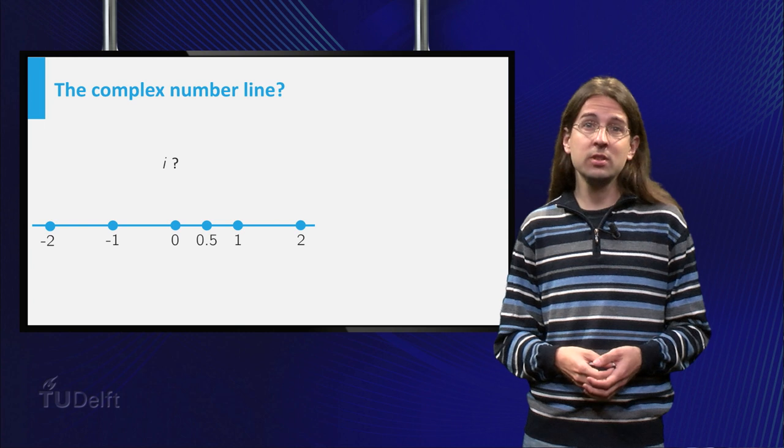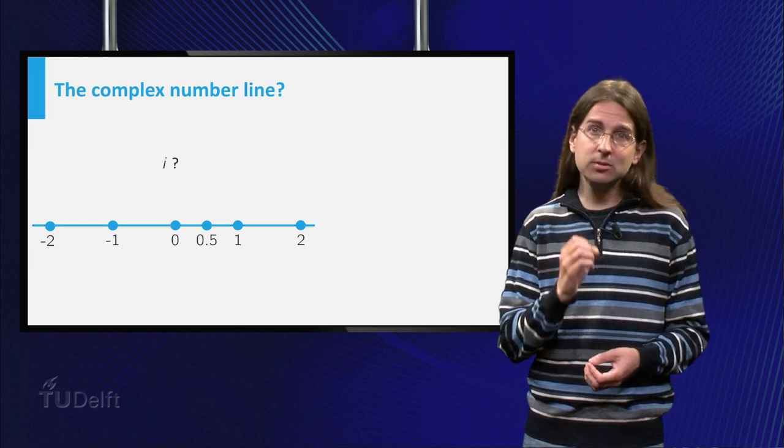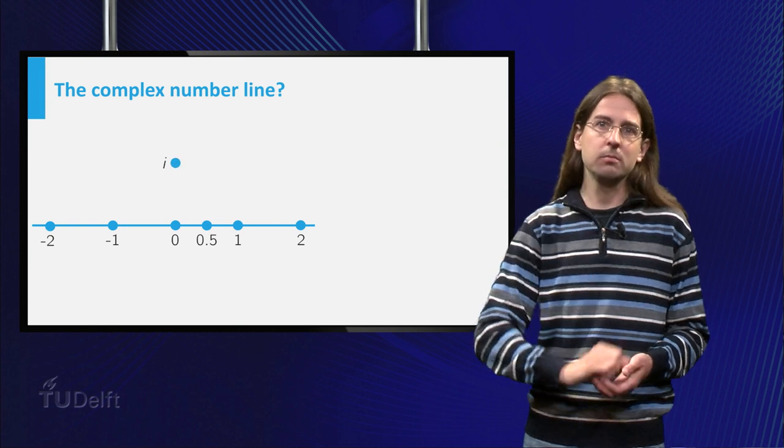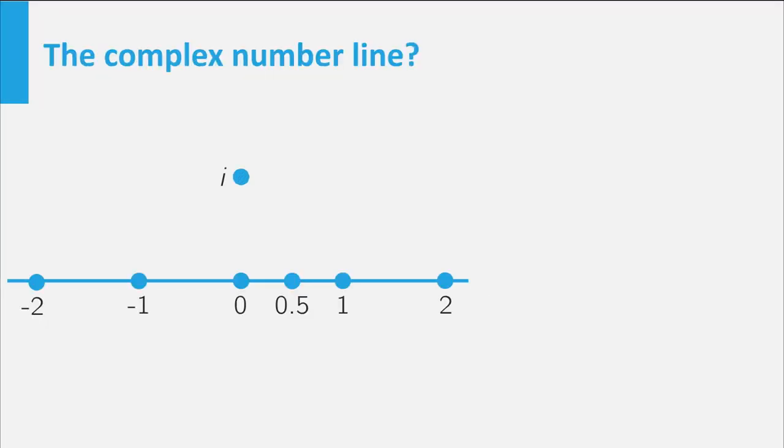Thus, there is no other option than to place i next to the line, and we choose to put it right above the zero. Now we know where i is, but i is not the only complex number. Where do we put other complex numbers?